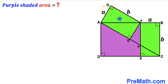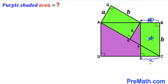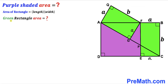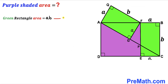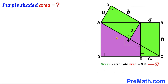Now let's focus on this green rectangle. If this side length of this green rectangle is lowercase a, then this side length is going to be a as well. Likewise for the other green rectangle, if this side length is lowercase a, then this side length is lowercase a as well. Recalling the area of rectangle formula — area equals length times width — the area of this green rectangle with dimensions a and b is a times b. I'm going to label this as equation number one.